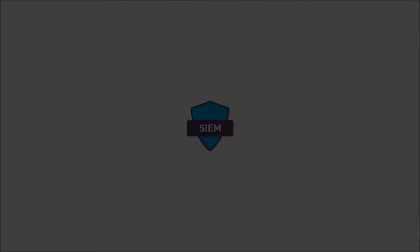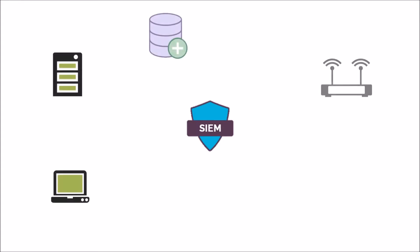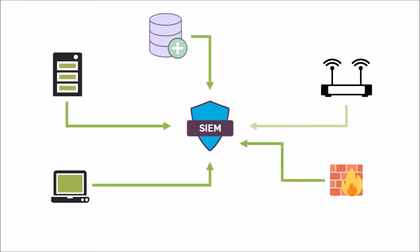An SIEM is a platform — whether it's software, hardware, or virtual appliances — that is installed into an enterprise network and allows you to have visibility into the network to see exactly what's happening from the endpoints, from your servers, databases, critical applications, switches, routers, firewalls, network intrusion prevention systems, and the list goes on.